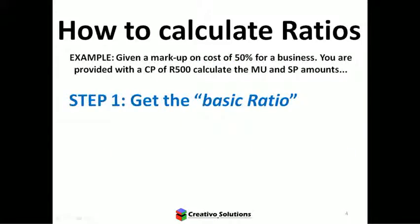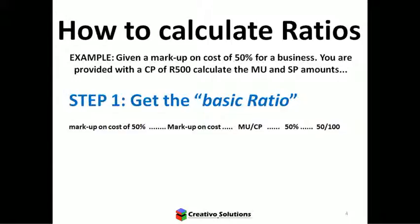Here's an example. Given a markup on cost of 50% for a business, you are provided with a cost price of 500. Calculate the markup and selling price amounts. Step one is to find the basic ratio. The question gave me markup on cost of 50%, which as a fraction is markup divided by cost price, equal to 50 over 100. So markup is 50, cost price is 100, and selling price is 100 plus 50, which gives 150. That's the basic ratio.